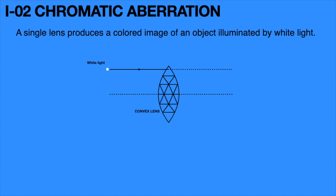From the formula, deviation delta is equal to h divided by f, which we already studied in the first topic. Therefore, delta is proportional to 1 by f, where f is the focal length of the lens and height h is constant.